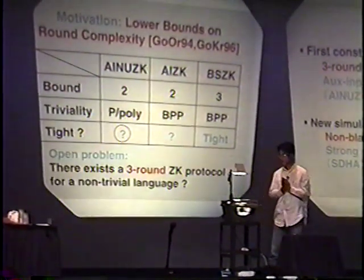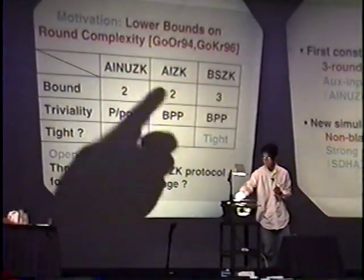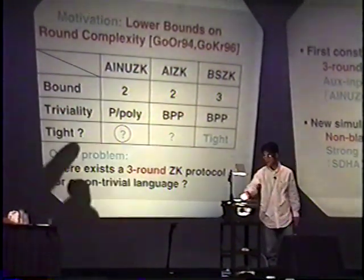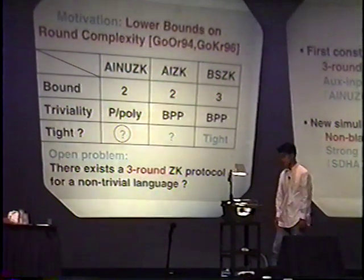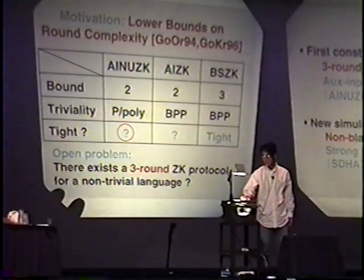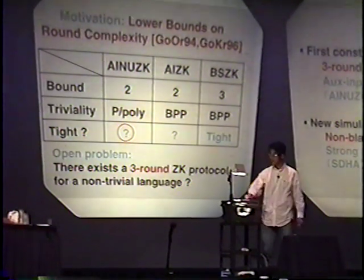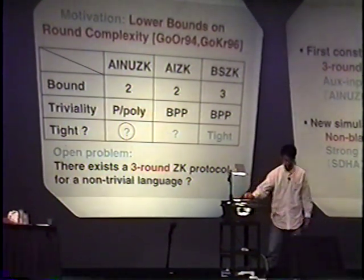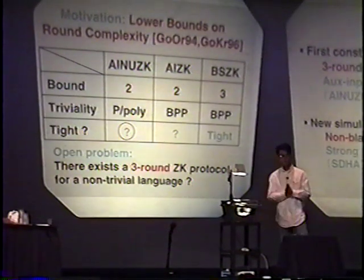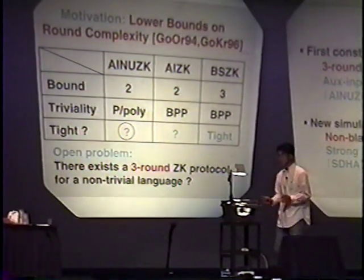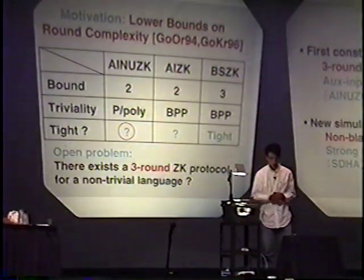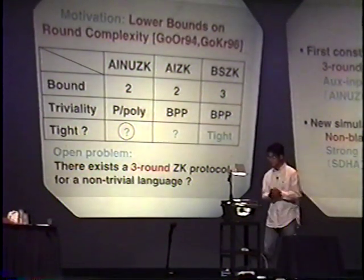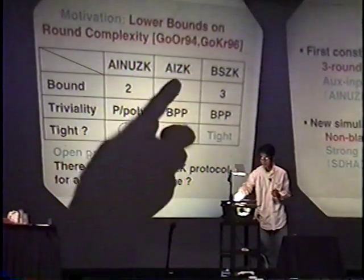The lower bounds regarding AIGK or AI-NGK are also known — three, too. But it is unknown whether these lower bounds are actually tight. So in other words, it is an open problem whether there exists a three-round AIGK or AI-NGK protocol for non-trivial languages, such as NP languages. And in this talk, we solved this problem with respect to AI-NGK. But our results do not apply to AIGK. So this problem is still open with respect to AIGK.